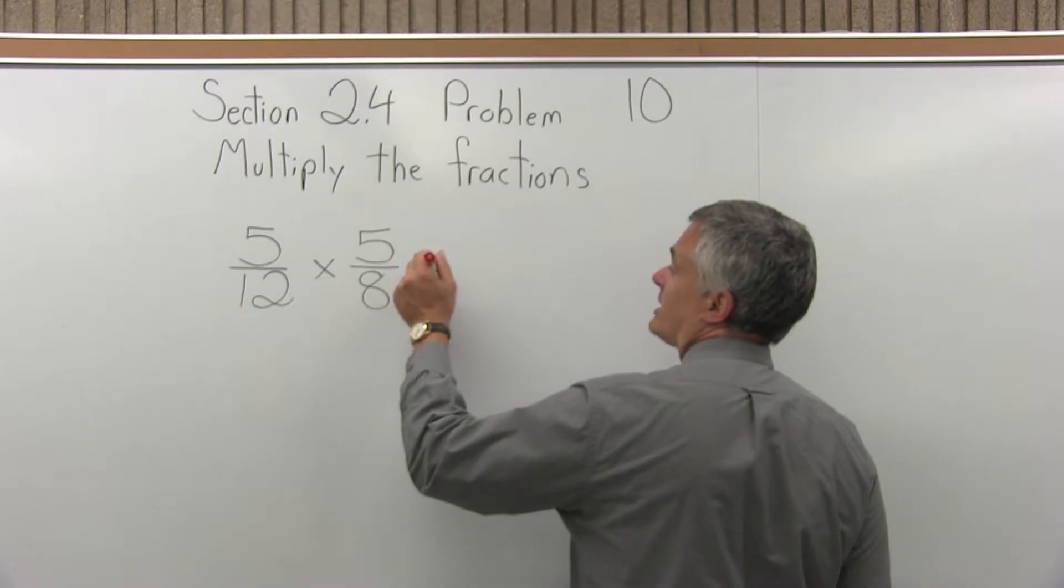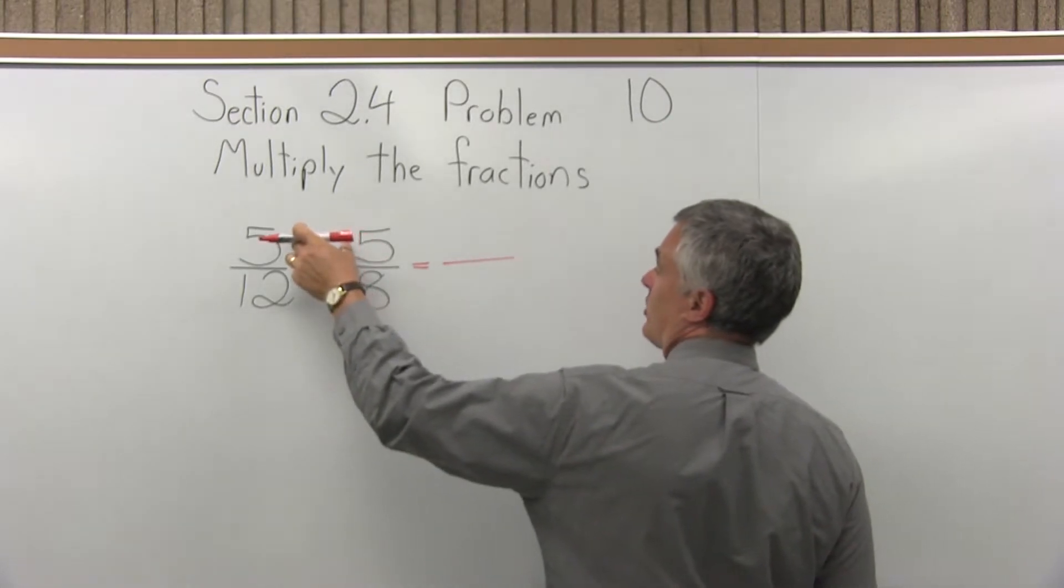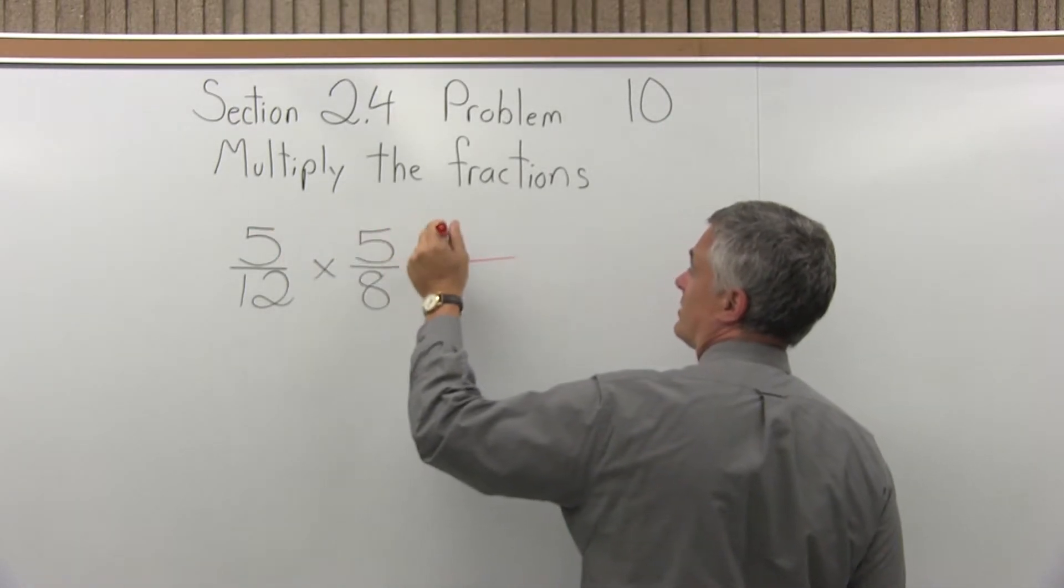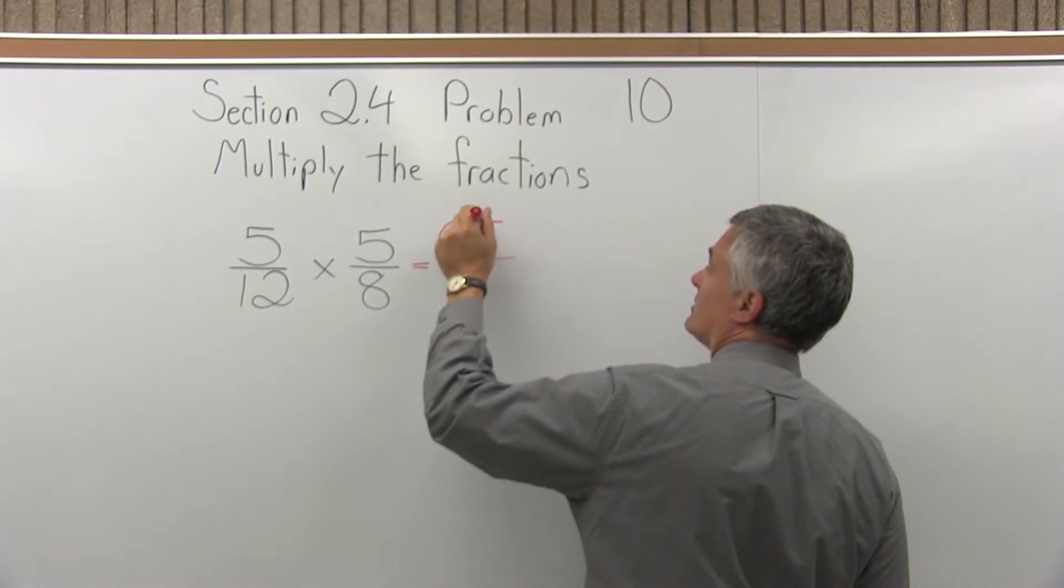So when we multiply fractions you want to multiply top times top or numerator times numerator, which in this problem would be 5 times 5 which is 25.